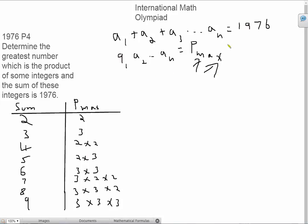So instead of looking at 1976, let's look at a few smaller sums. I've written a list of sums here from 2 to 9, and we can see that there's a fairly clear pattern here. The maximum product always involves only 2s and 3s.